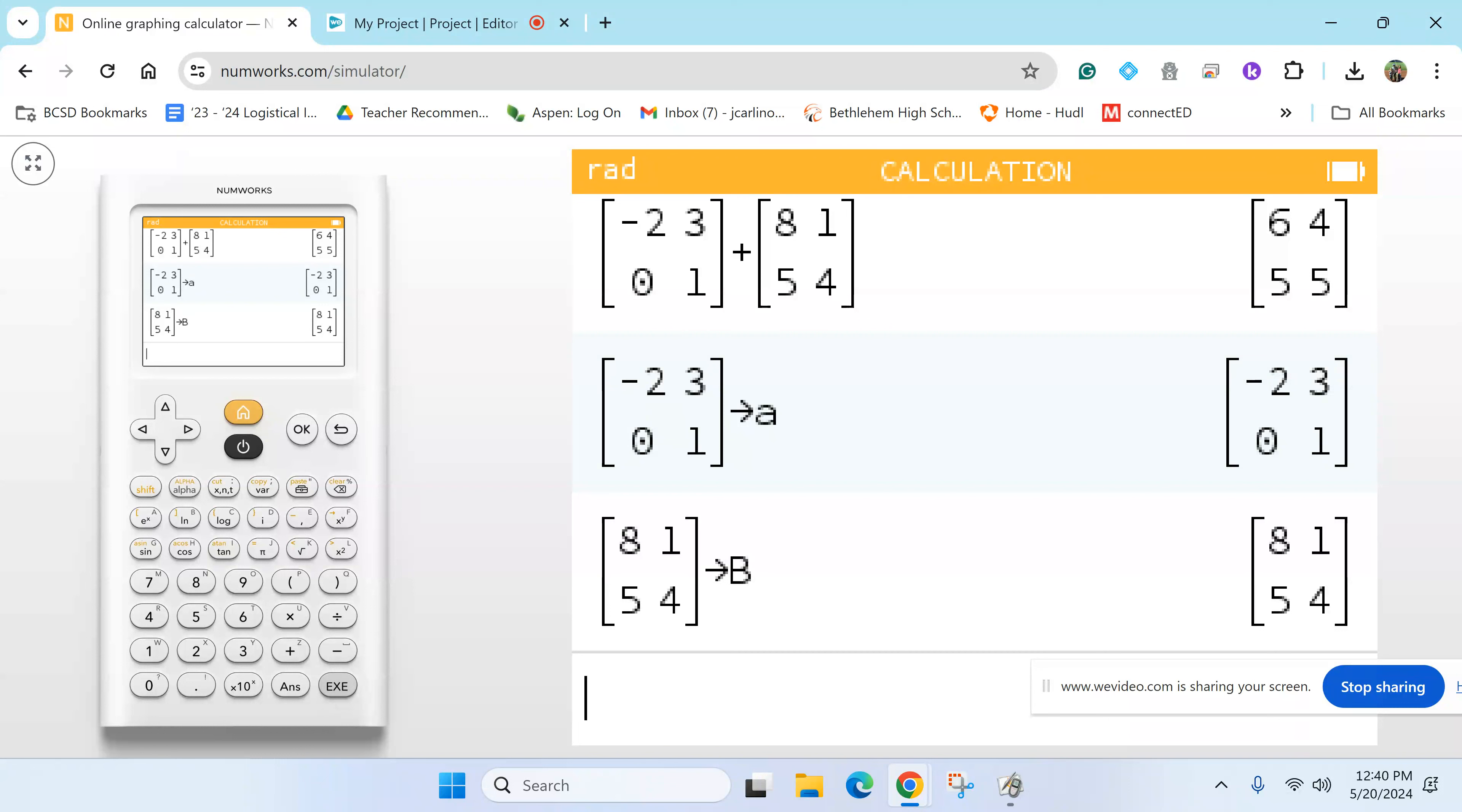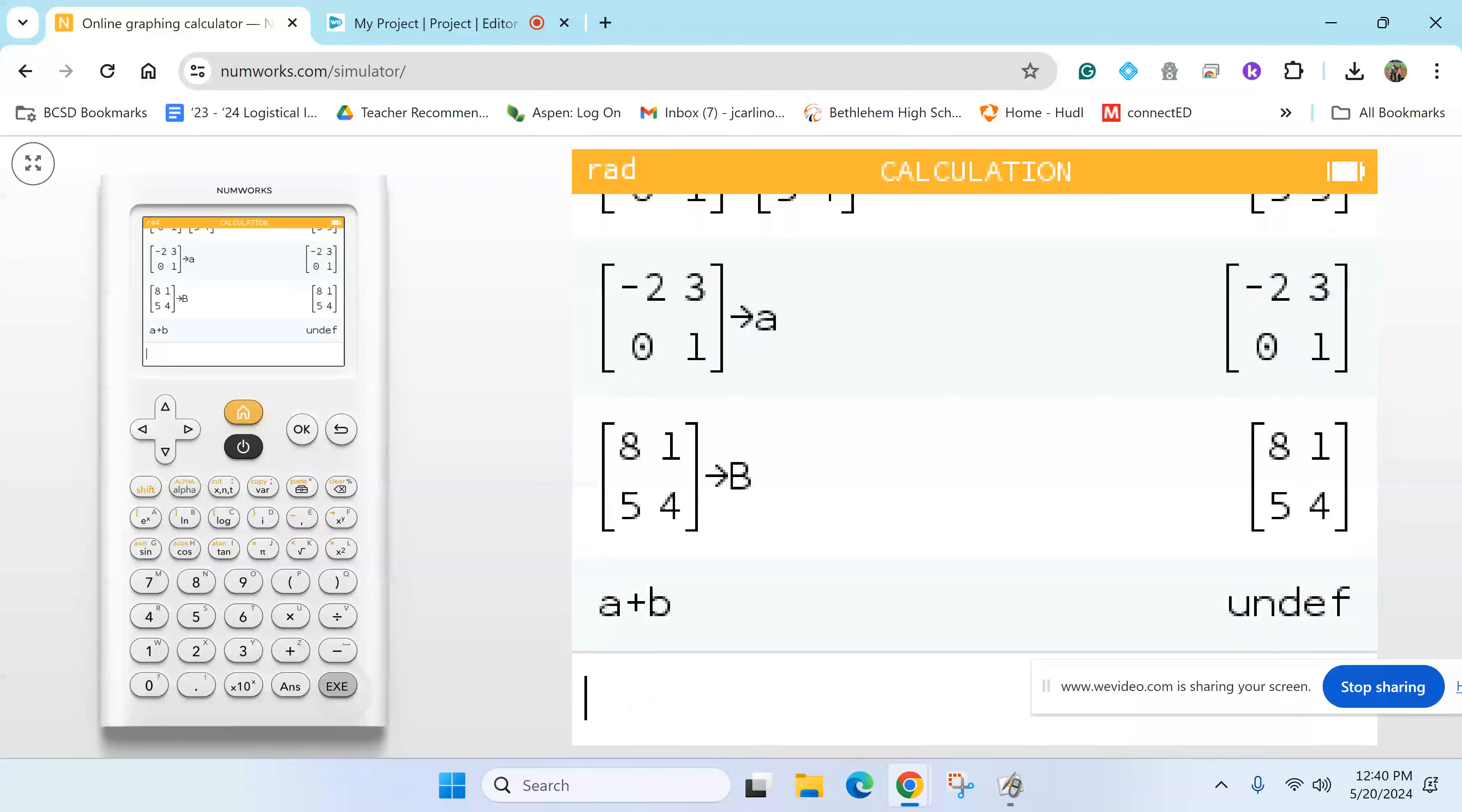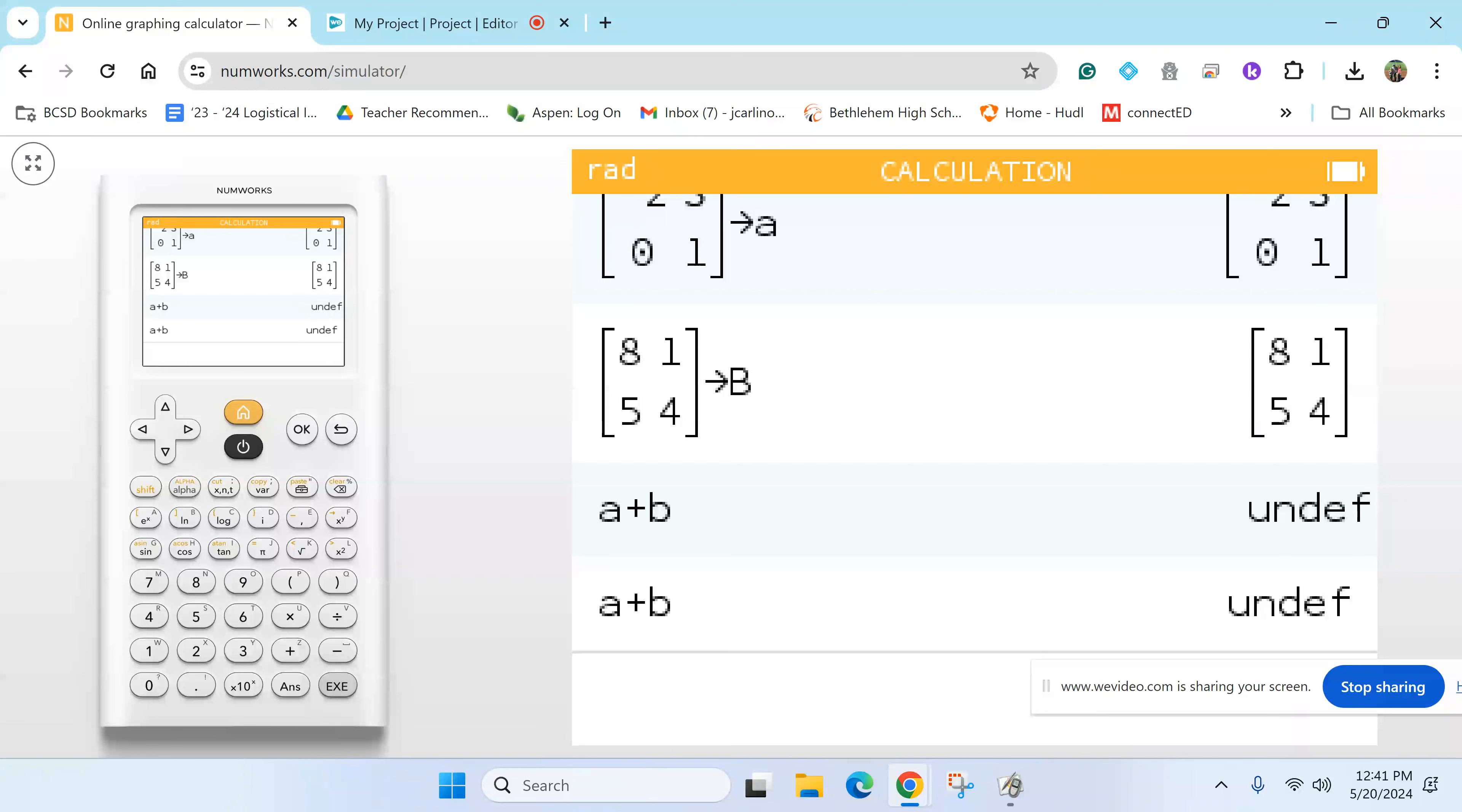Now that I have that stored in, I can do parts A, B, C, and D in a row. So I go A plus B. Why won't it come up now? Why isn't it working now for me when I do A plus B?